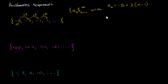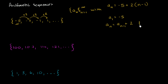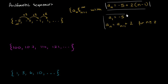If we wanted to write it recursively, we could say: a sub 1 is equal to negative 5, and then a sub n is equal to a sub n minus 1 plus 2, for n greater than or equal to 2. Either of these are completely legitimate ways of defining this arithmetic sequence — we could define it explicitly or recursively.